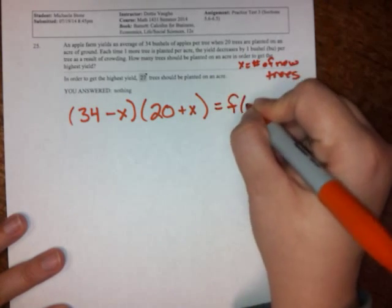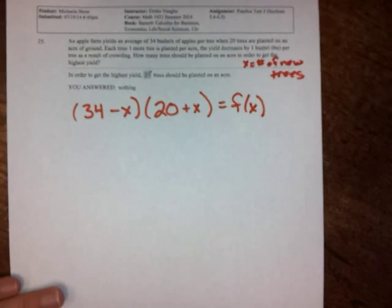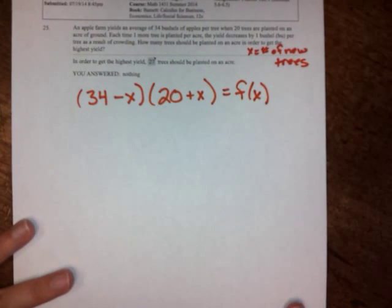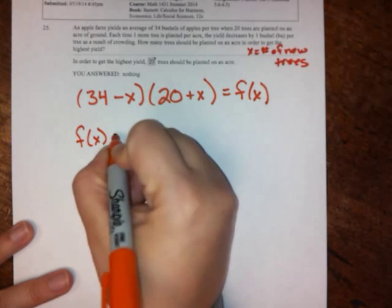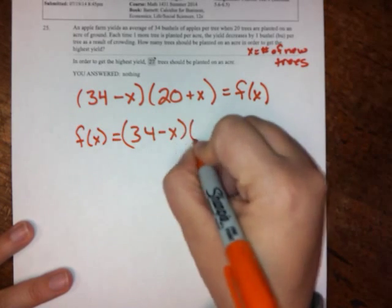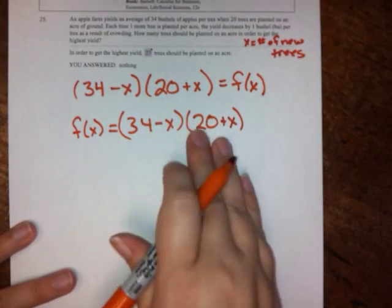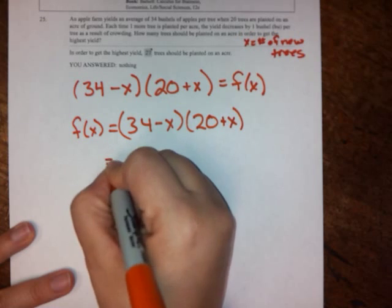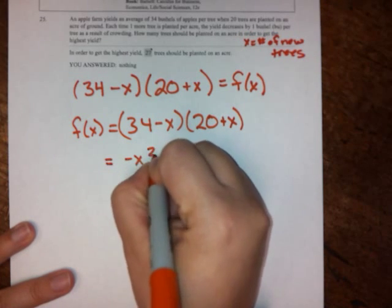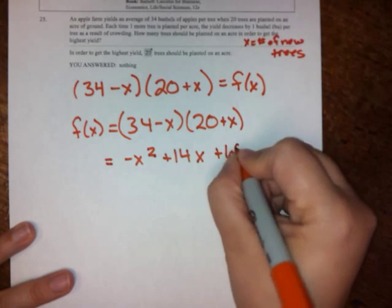And that is our f of x. Alright, so in order to maximize, to find the information that we're looking for, we need to take a derivative and set it equal to zero. So f of x equals 34 minus x times 20 plus x. And if you FOIL that out, what you're going to get is negative x squared plus 14x plus 680.